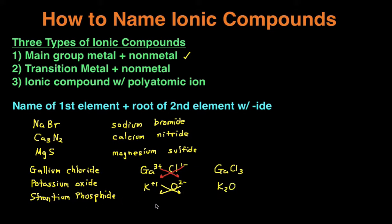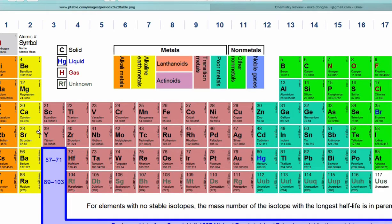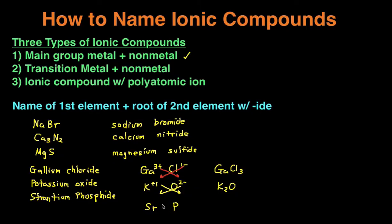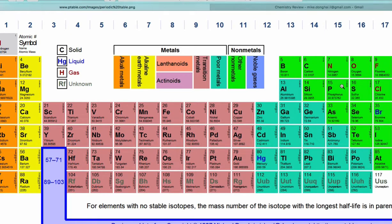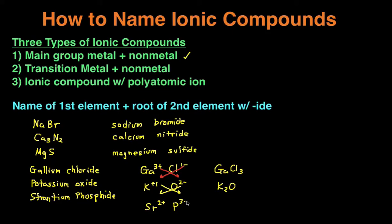Last example: strontium phosphide. Strontium is Sr, and phosphorus is P. Strontium is in the second column, so it's going to be positive two. Phosphorus is over here, so it's going to be negative three. We check — the charges don't cancel each other out — so again we crisscross, and that gives us Sr₃P₂. And that's how you go from the name to the formula.